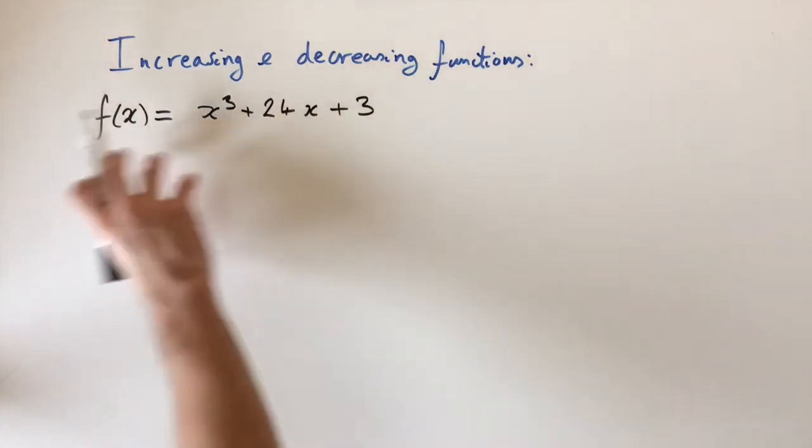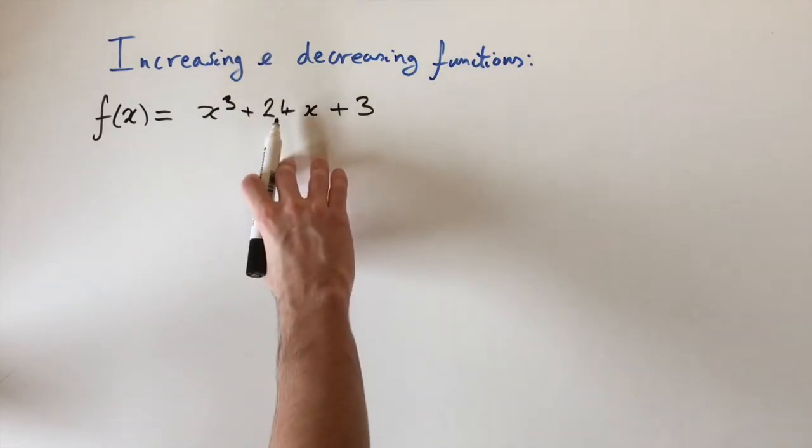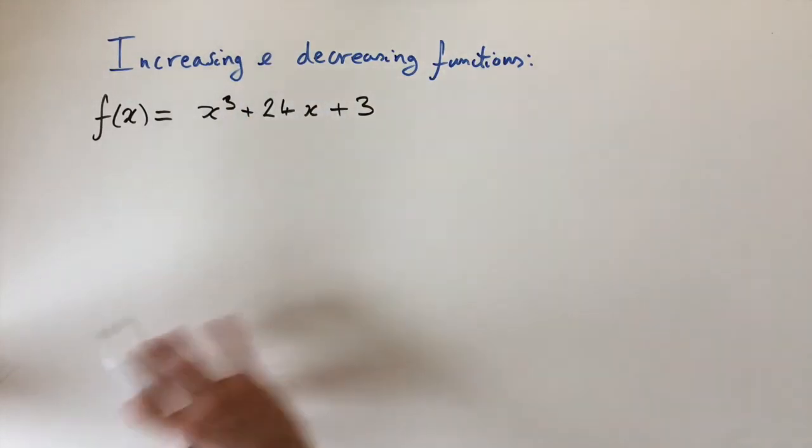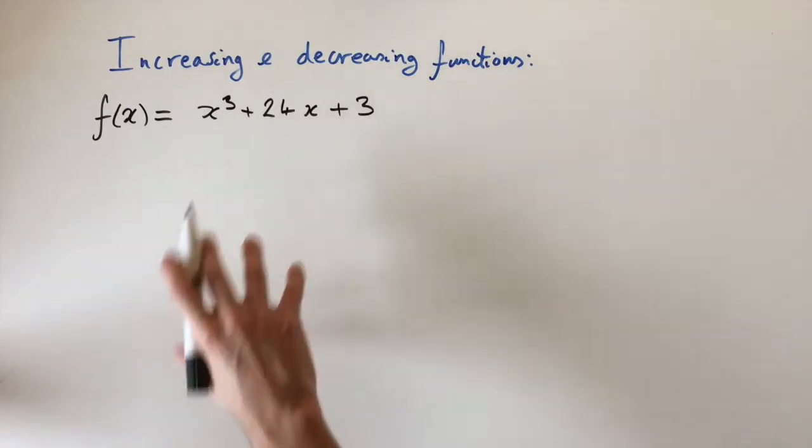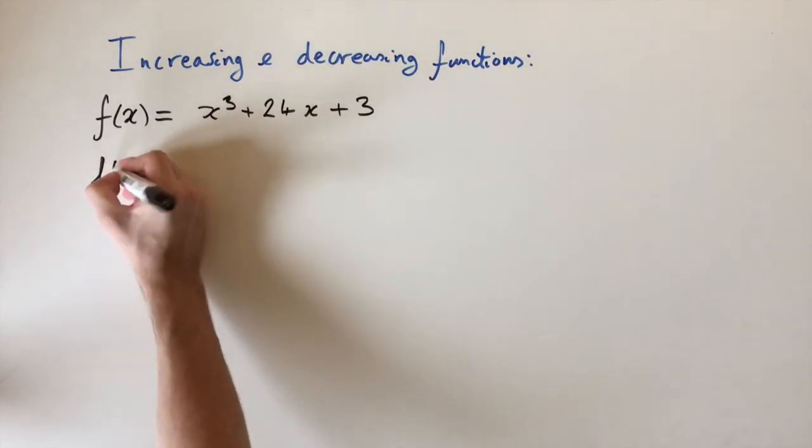Okay, for our first example, we're given this function, which is a cubic, so x³ + 24x + 3. And we need to find out if it's increasing or decreasing and whereabouts that happens. So remember, from what we were saying earlier, we could test this by finding its derivative. So first, we differentiate this function, f'(x).